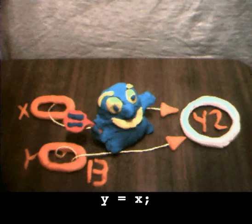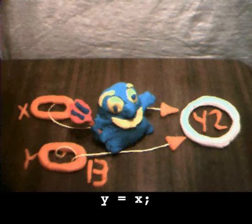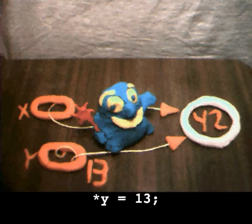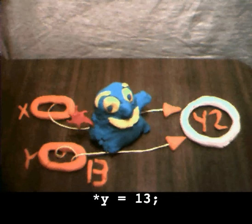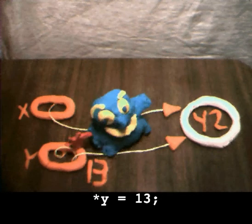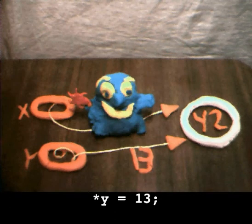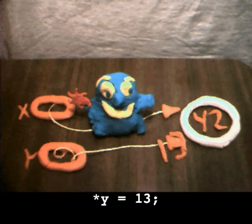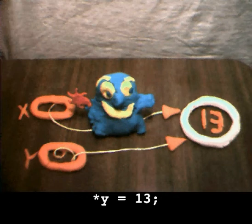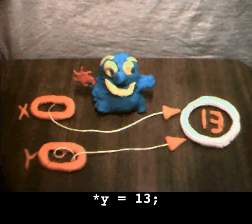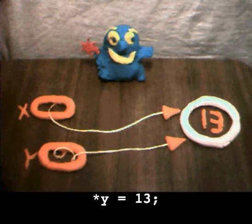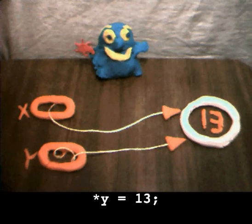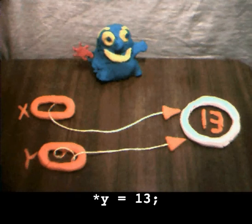So wait, now y is fixed. It has a pointee, so you can try the wand of dereferencing again to send the 13 over. Okay, here goes. Hey, look at that. Now dereferencing works on y. And because the pointers are sharing that one pointee, they both see the 13. Yeah, sharing, whatever.